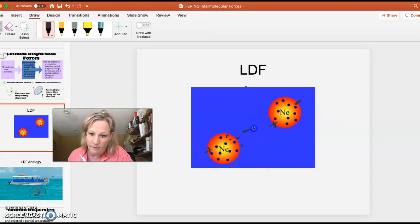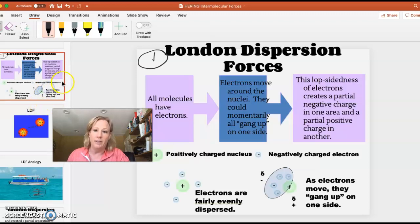So the IMF is right here between this neon and this neon. This happens for everything because the electrons just at any given moment tend to gang up on one end. But it's a temporary situation, a temporary dipole, so it doesn't last.